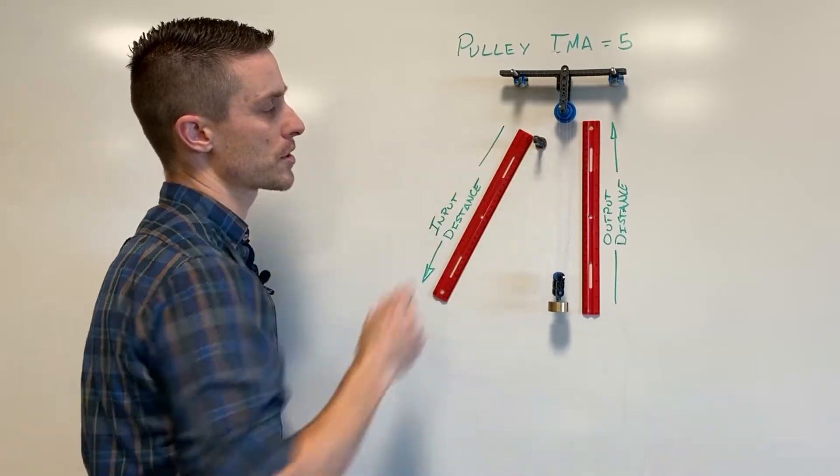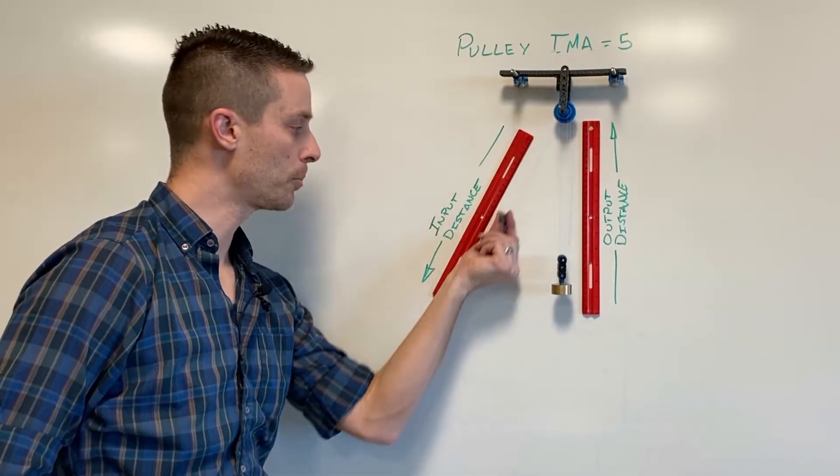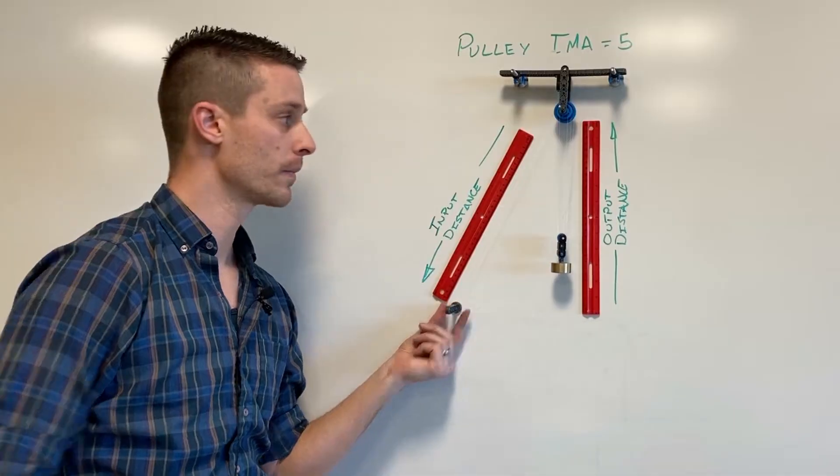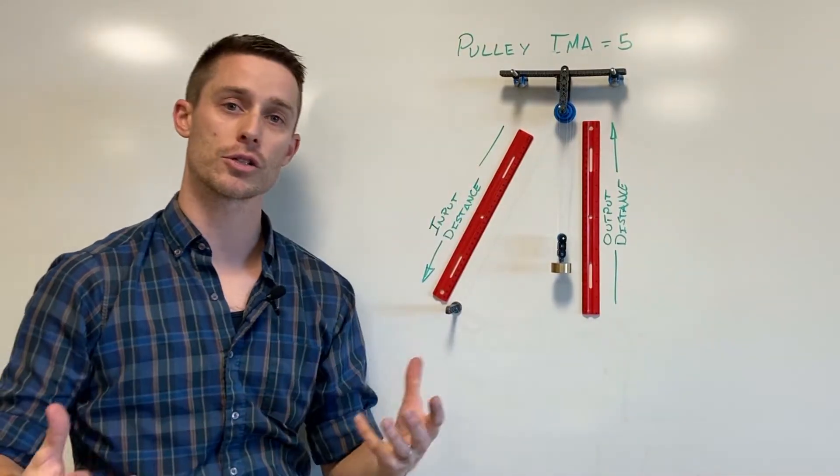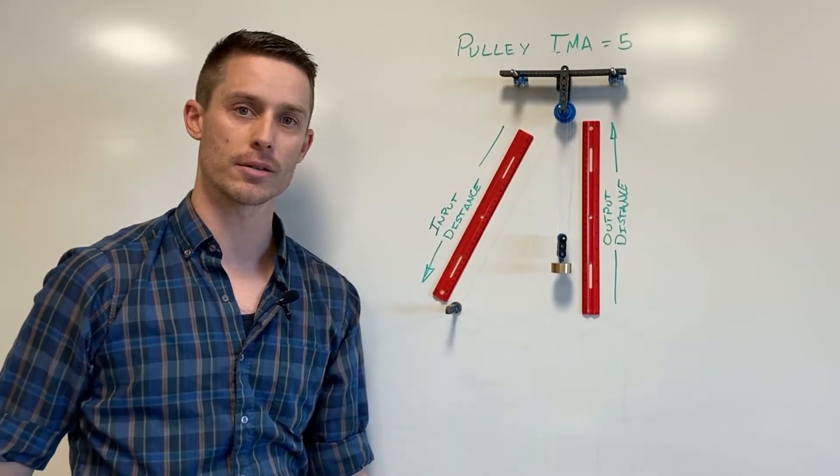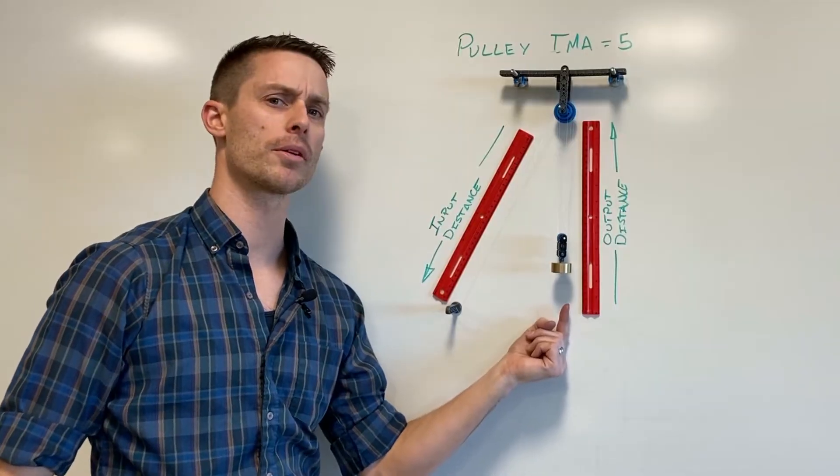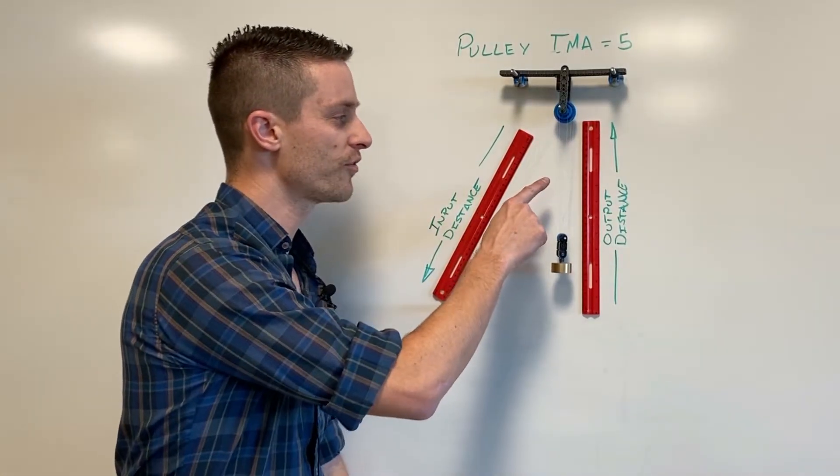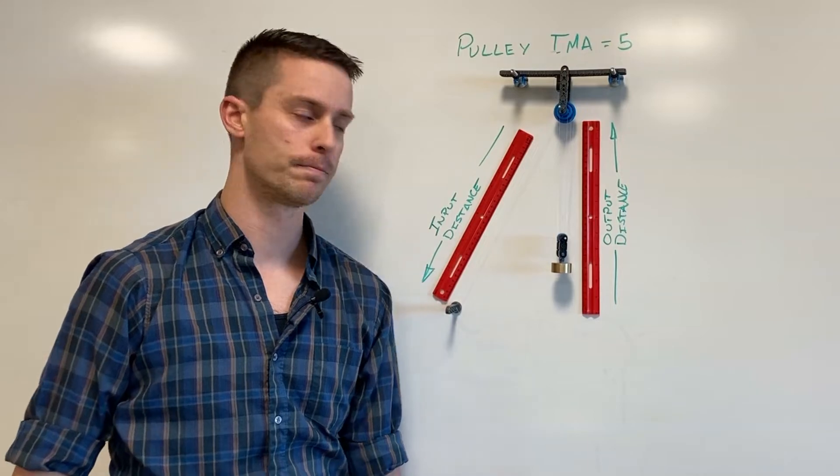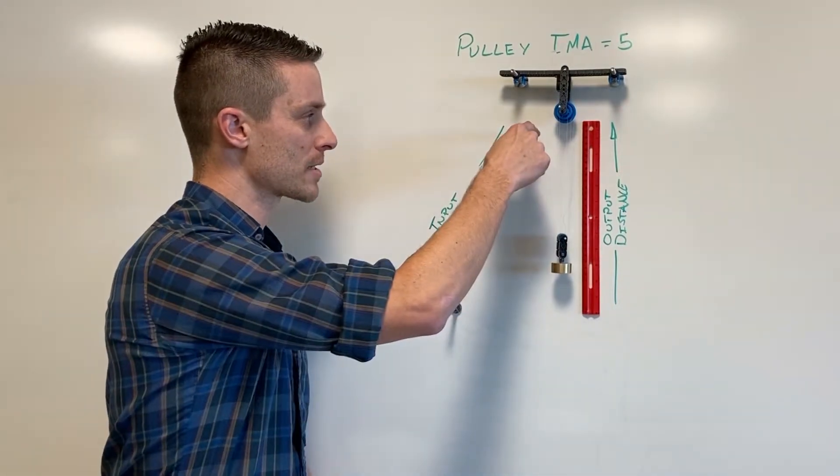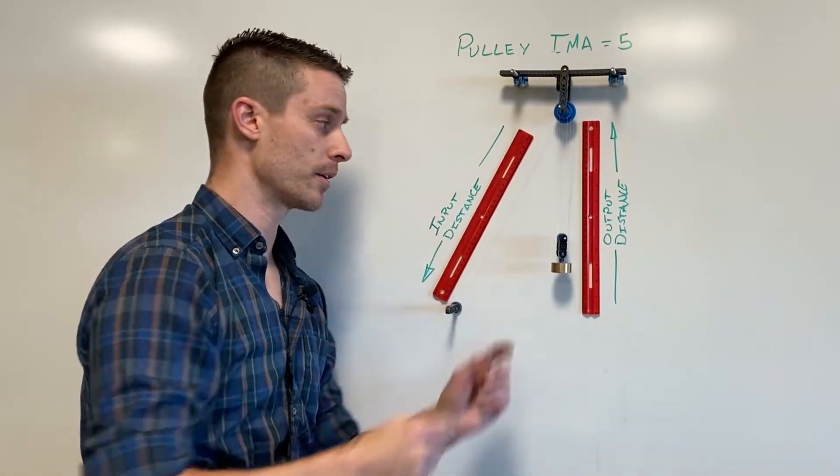If I start with the input side of our pulley right here and I pull it 30 centimeters downward we know this segment of the string has grown in length by 30 centimeters but this hasn't moved up 30 centimeters and that's because there's five strands over here and ultimately what's happened is this side grew by 30 centimeters.